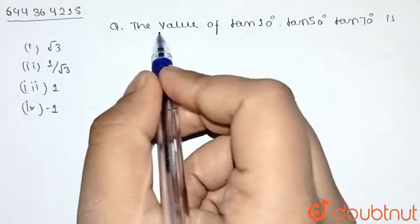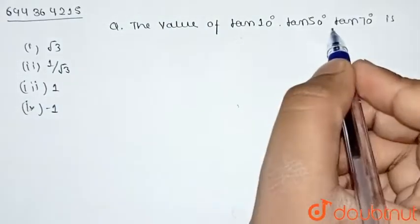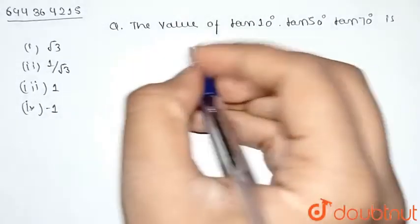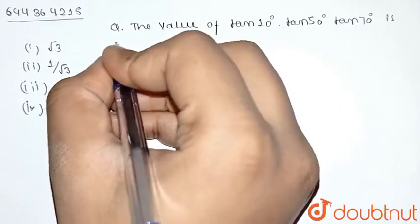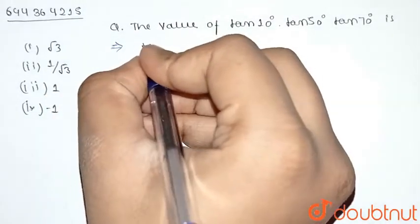So we have this question: the value of tan10° × tan50° × tan70°. We can write this as tan10° times...